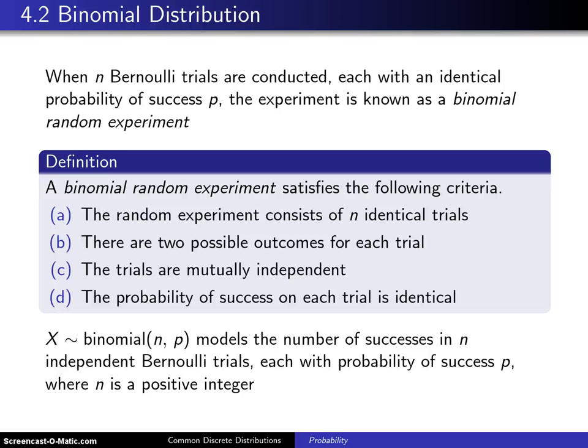Chapter four takes on discrete distributions which arise in practice. We have hit the first of those discrete distributions, which is the Bernoulli distribution. This is the second of the distributions, which is the binomial distribution. Arguably, the binomial distribution is the best known of all the discrete distributions.